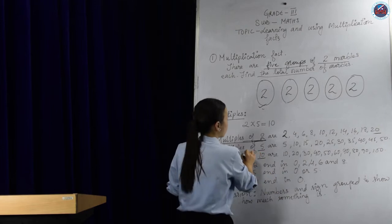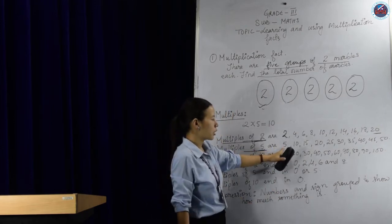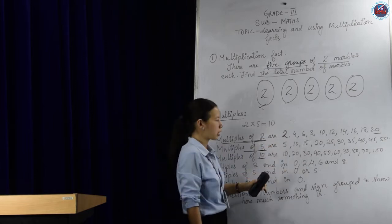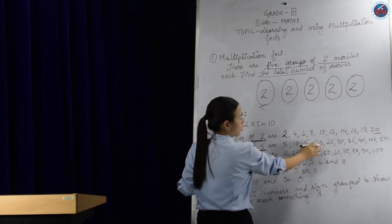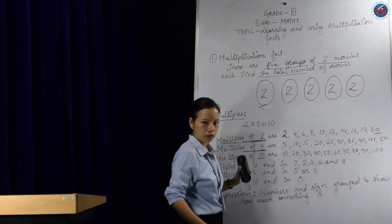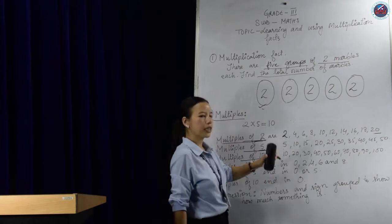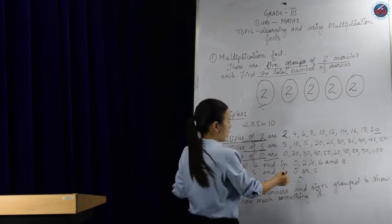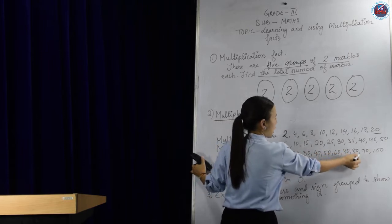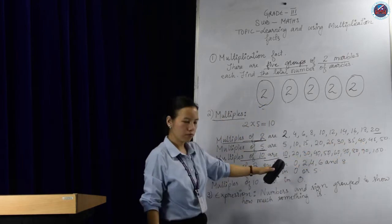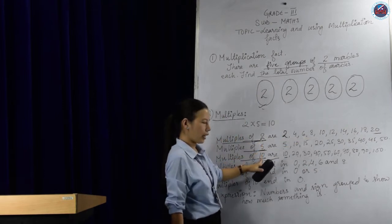Now what about 5? To find the multiples of 5, you have to count on by 5 places each time. You get your numbers as 5, 10, 15, 20, 25, and so on. And for the multiples of 10, you count on by 10 places each time: 10, 20, 30, 40, 50, 60, 70, 80, 90, and it goes on. So these are the multiples of 2, 5, and 10.